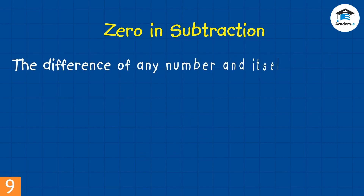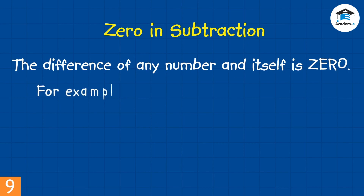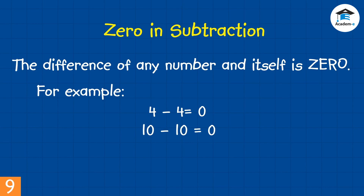The difference of any number subtracted from itself is 0. For example: 4 minus 4 equals 0; 10 minus 10 equals 0; 2 minus 2 equals 0.